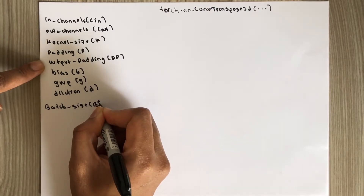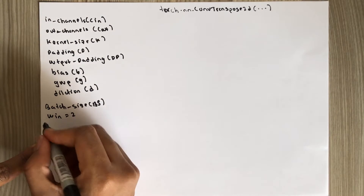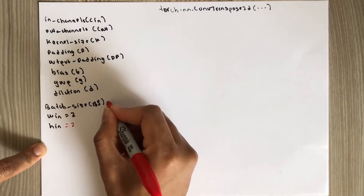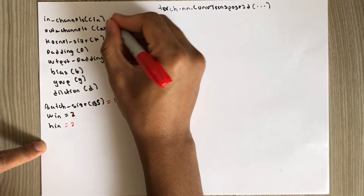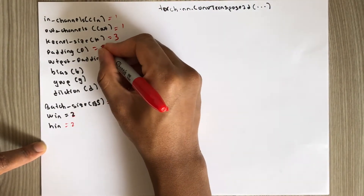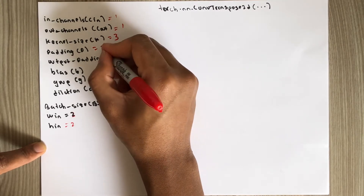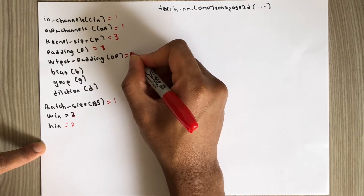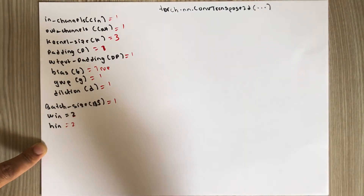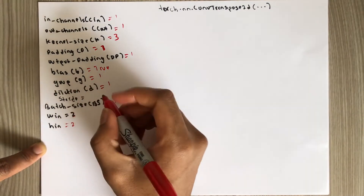For simplicity, we will use a batch size of one. The input height is going to be two and the width is also going to be two. The input channels will be one, the kernel will be 3x3, stride will be two, padding is one, output padding is one, and bias is true. Groups is one by default, and stride is two.